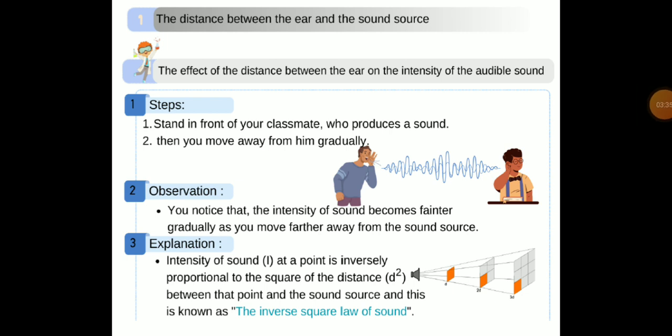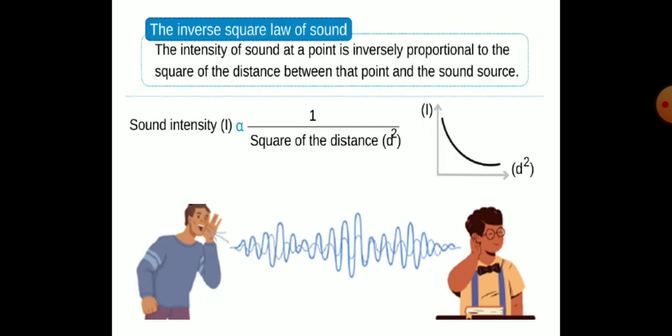Number one: the distance between the ear and the sound source. The intensity of sound at a point is inversely proportional to the square of the distance between the sound source and that point. This is known as the inverse square law of sound: intensity of sound at a point is inversely proportional to the square of the distance between the point and the sound source.